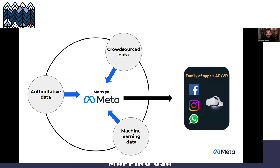In this graphic, I have Maps at Meta in the center, showing the big picture of how we think about data. Open data is extremely important, and some of that is crowdsourced — that's where OpenStreetMap comes in. There's also data crowdsourced by Facebook users or business page owners who volunteer location information. There's authoritative data — like buildings from county GIS data sets or address locations — and machine learning data like roads and sidewalks extracted from satellite imagery. All of this mixes into the general map, then gets pushed out to apps as well as future augmented reality and virtual reality products.